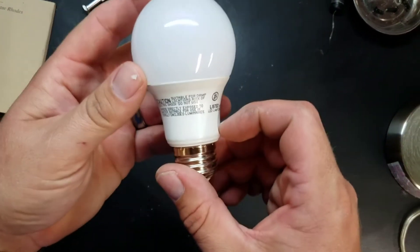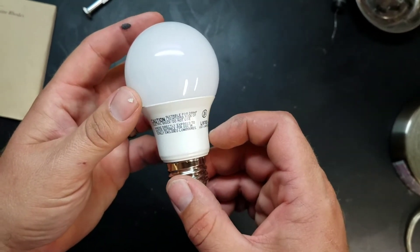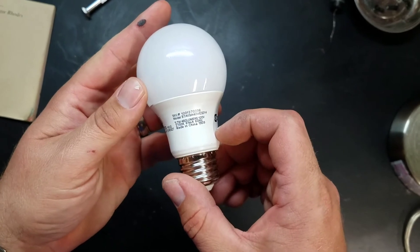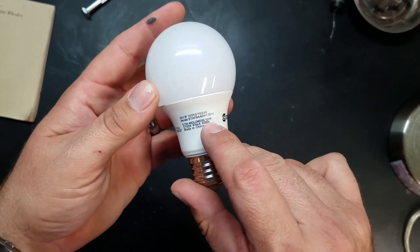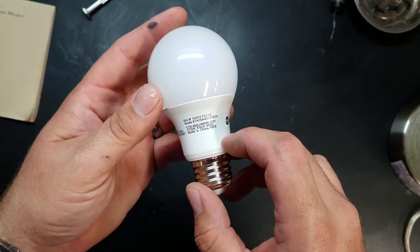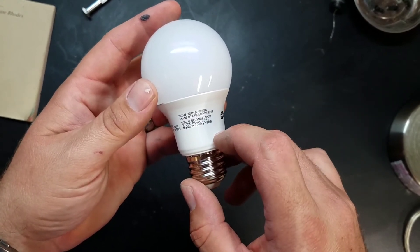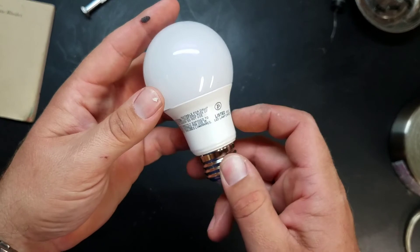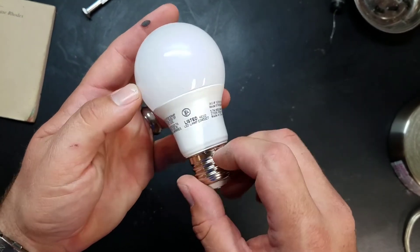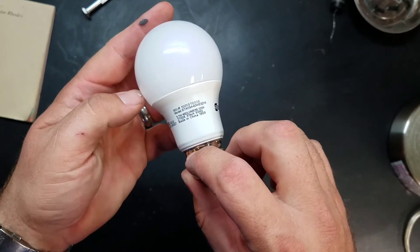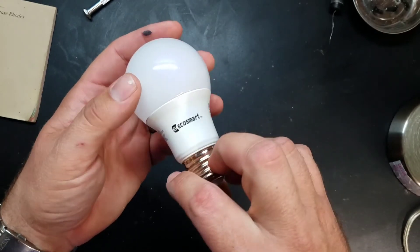Okay, so this bulb doesn't say it's 120 volts, but I mean, it's also supposed to be dimmable. That's what the box says. Didn't say it on the bulb though.